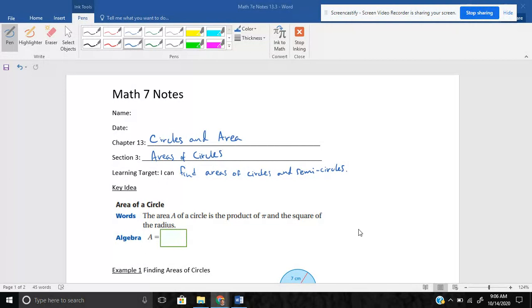For the key idea today, it says the area A of a circle is the product of, so we're multiplying, pi and the square of the radius. So if I were to write that as an equation, it would be A equals pi, product of means times, the square of the radius, so radius squared. A equals pi r squared. So we just need to take pi and multiply that by our squared radius.